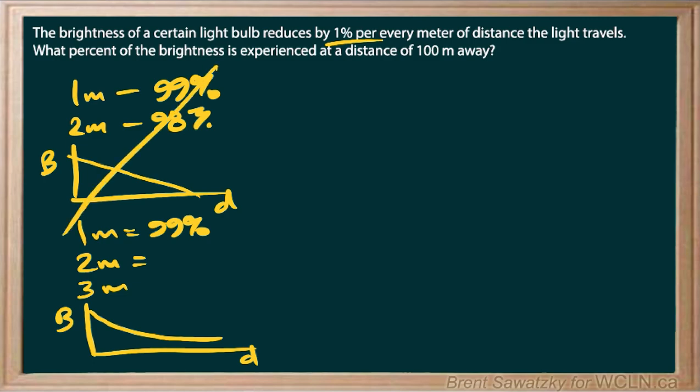So we have to think about it as exponential decay. Being able to recognize it as such, what we could do is jump straight into the idea of, if we call B the brightness, the brightness would be the original brightness, and then we have our change here.